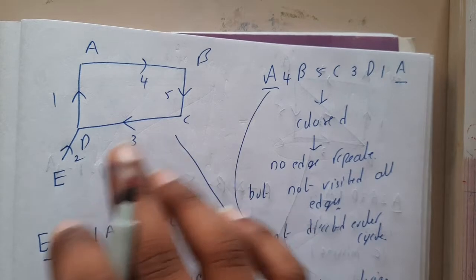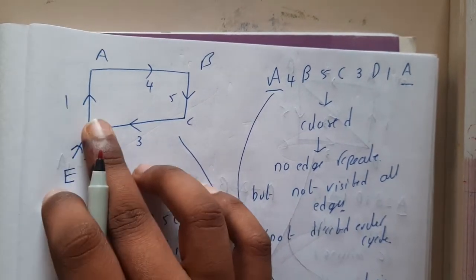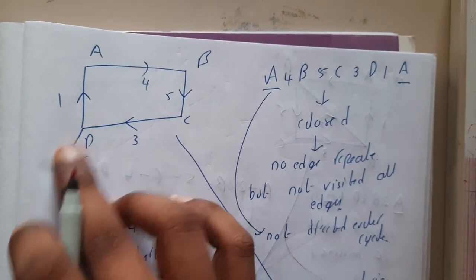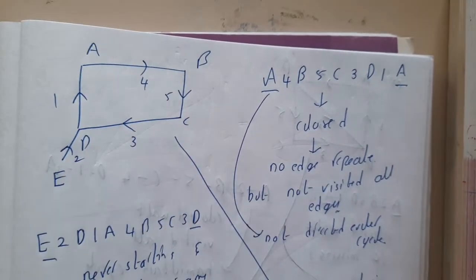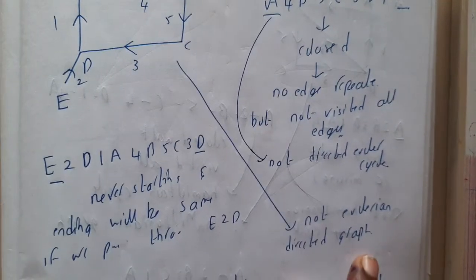If you take this example, you can come out of E but you cannot come inside. In these kind of situations, you can directly by observing also say it is not a Eulerian directed graph.